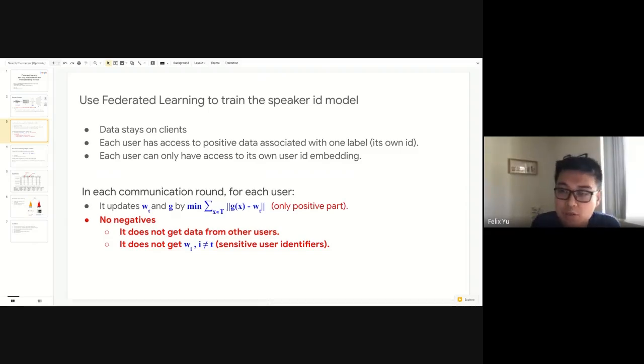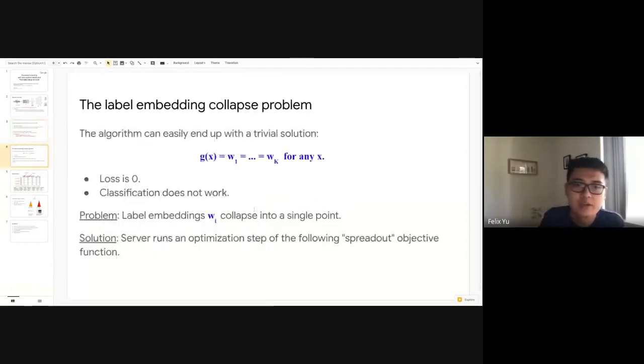The problem here is that if we use vanilla federated learning, then in each communication round for each participating user, you can only update the neural network model and the final user embedding based on only the positive part of the loss function. You can only minimize the distance between the voice embedding and the positive user embedding. It's very easy to see that one trivial solution is that the algorithm can easily end up with all the user ID embeddings and item embeddings being the same. In this case, you will have loss zero, but obviously classification does not work.